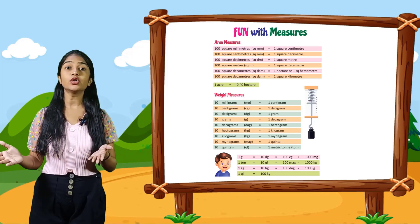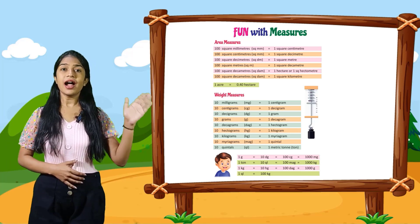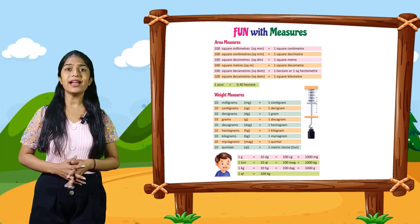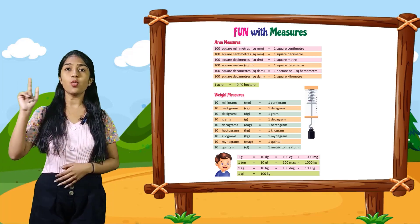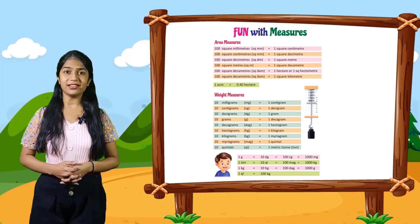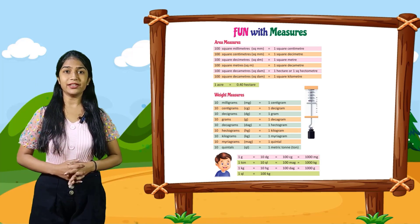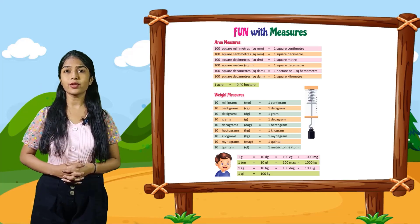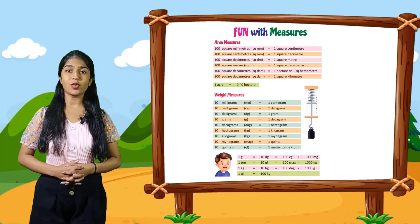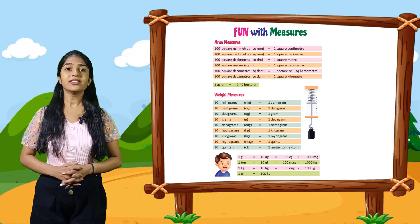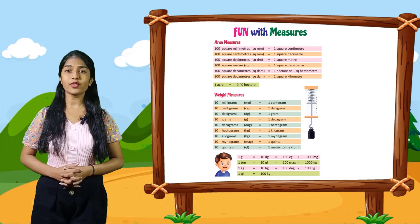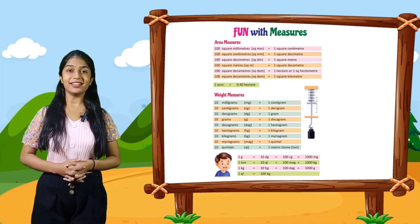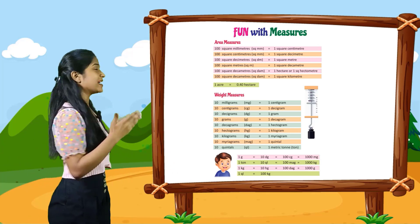So now we will do area measures. 100 square millimeters is equal to 1 square centimeter. 100 square centimeters is equal to 1 square decimeter. 100 square decimeters is equal to 1 square meter. 100 square meters is equal to 1 square decameter. 100 square decameters is equal to 1 hectare or 1 square hectometer. 100 square hectometers is equal to 1 square kilometer. 1 acre is equal to 0.40 hectare.